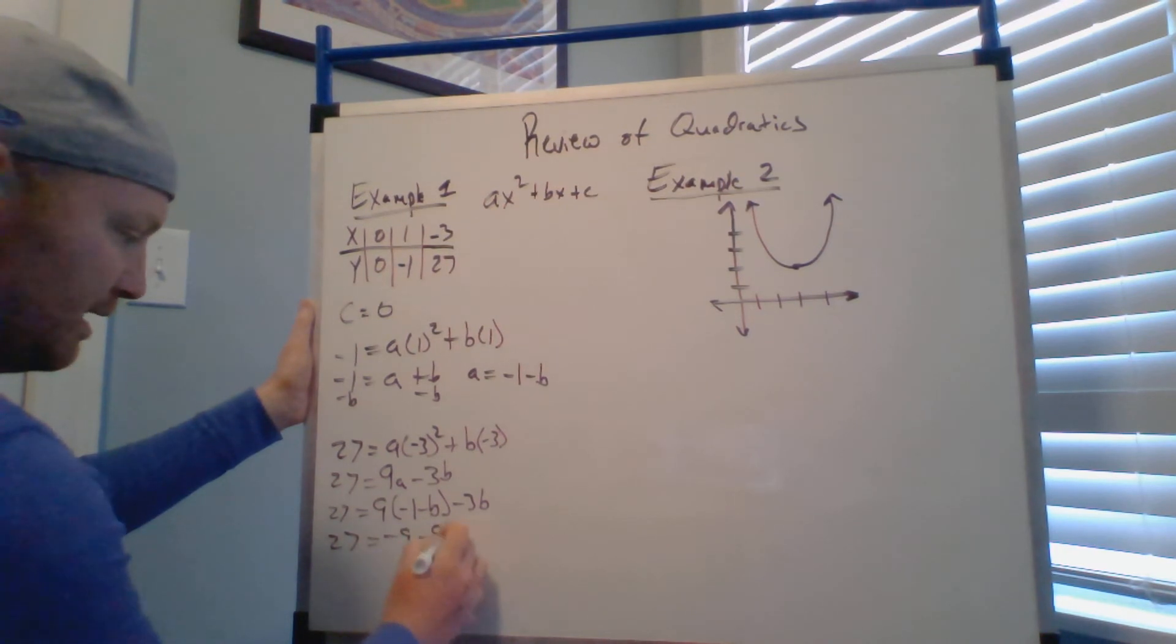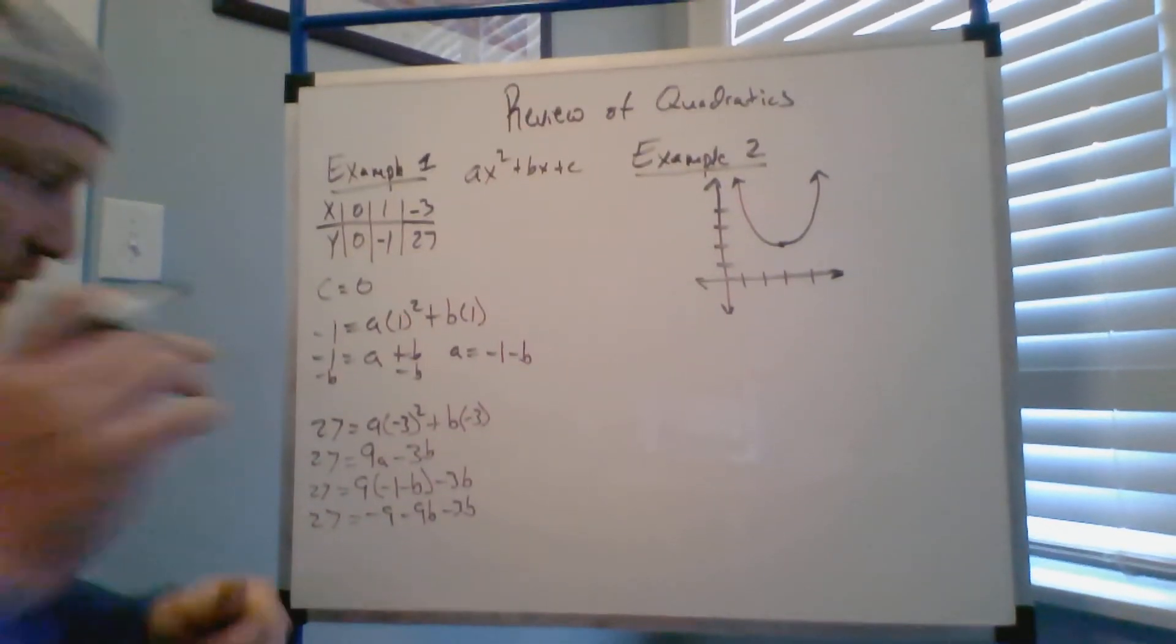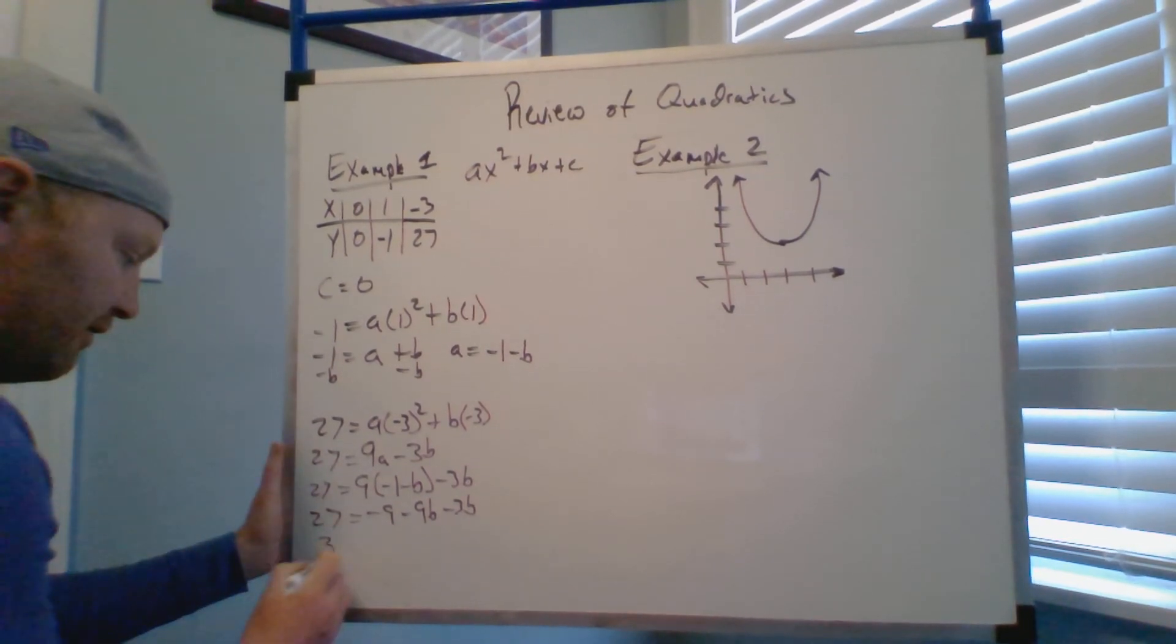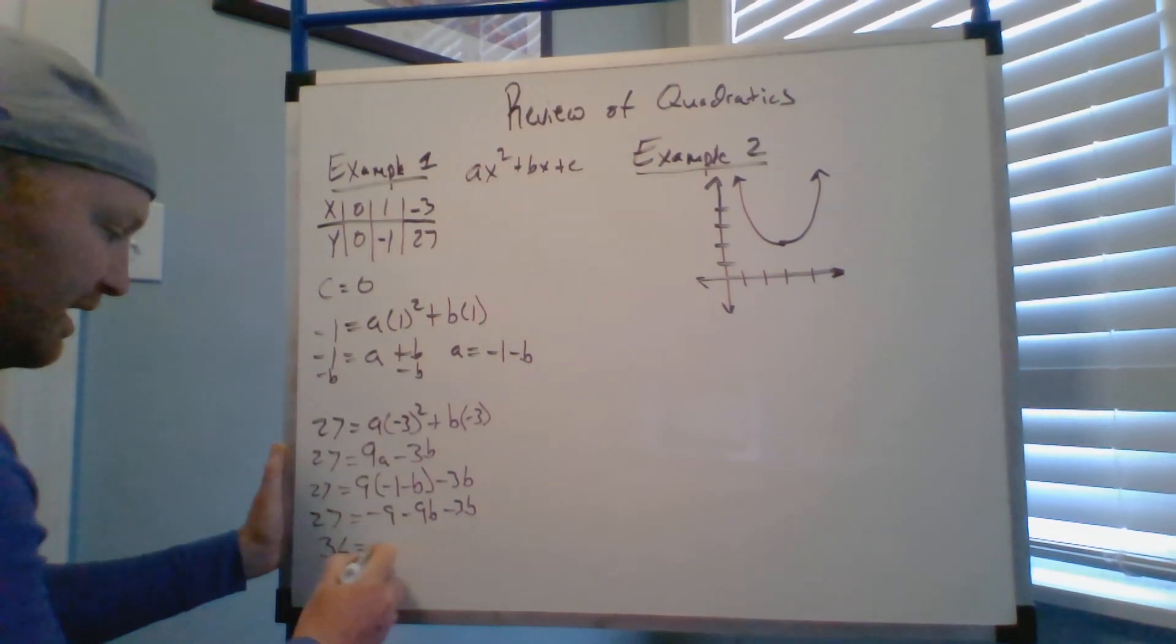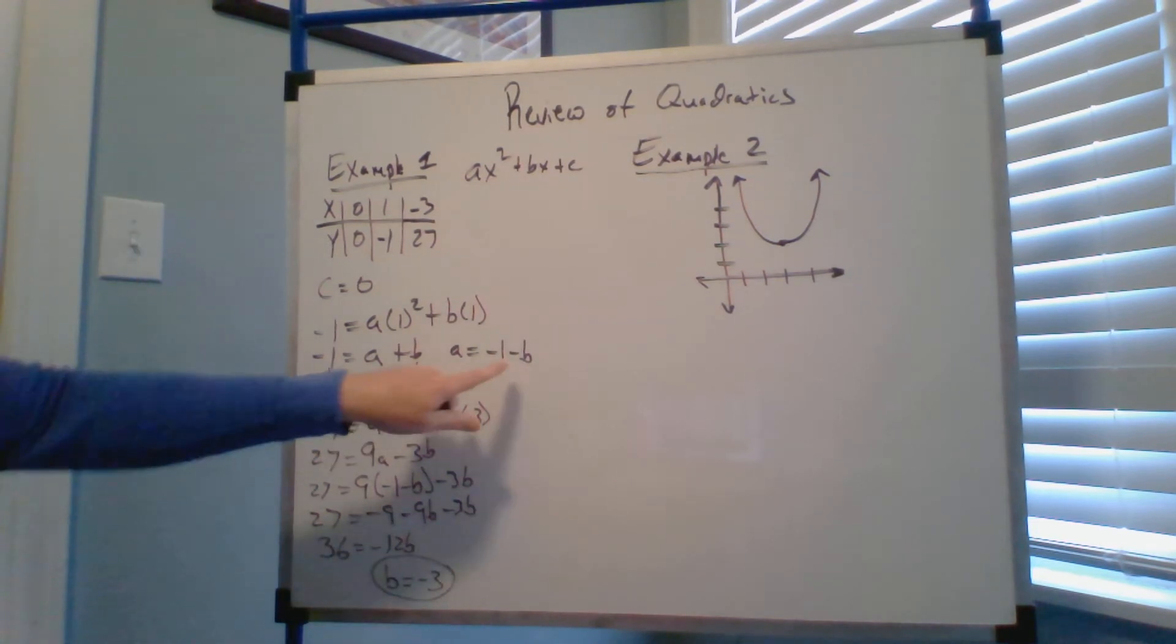So I have 27 equals nine times negative one minus B minus three B. So now I have 27 equals negative nine minus nine B minus three B. I'm going to add nine to both sides. I'm going to have 36 equals negative 12B. Divided by negative 12 on both sides, so B is going to equal negative three.